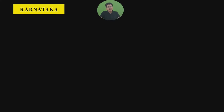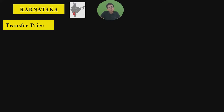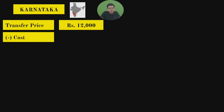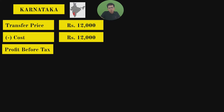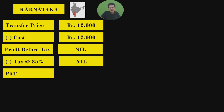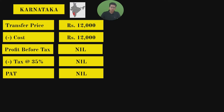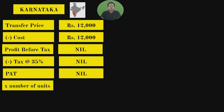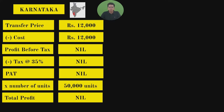Now for the Karnataka division: sales equals transfer price = ₹12,000. Cost of making the phone is also ₹12,000. So profit before tax is zero. No matter what the income tax rate, profit after tax is also zero. The first division manufactures phones at ₹12,000 and transfers at ₹12,000 — there is no profit. Even if you multiply by 50,000 units, total profit is still zero.